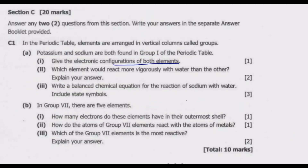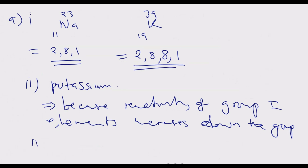We move to Roman numeral 3: write a balanced chemical equation for the reaction of sodium with water, including state symbols. Sodium is basically a solid because it is a metal. We react it with water, which is a liquid.